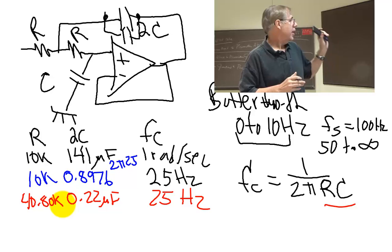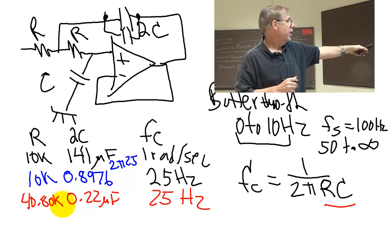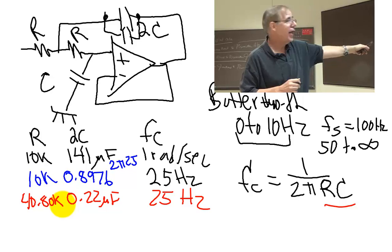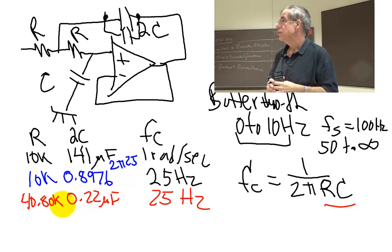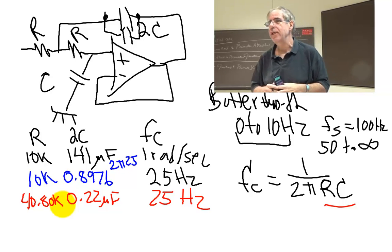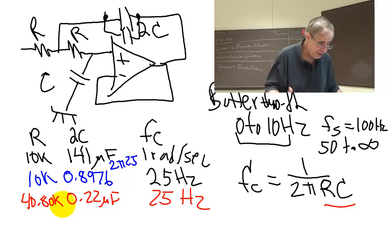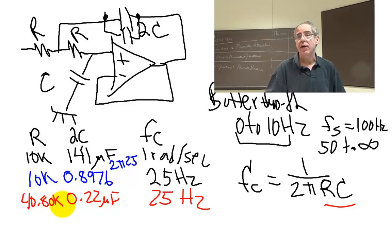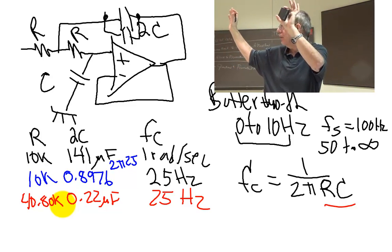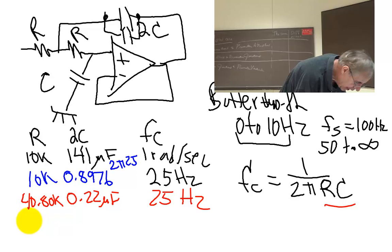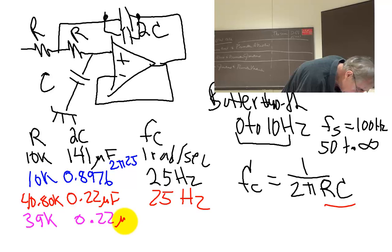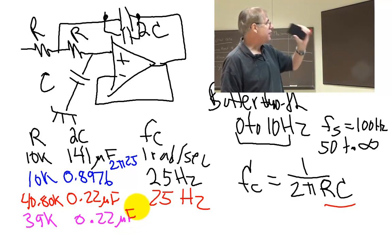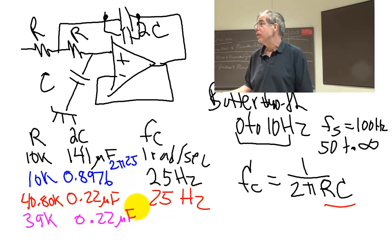And then you go, well, do you got any 40.8s? And they're still going to look at you funny. So then you go, I'm thwarted. What if, well okay, so what do you have? You go back to that E12, remember that E24 thing? And I say, well, I got some 39Ks. What would happen if I put a 39k in there rather than a 40.8?